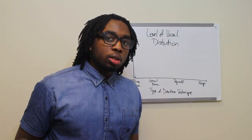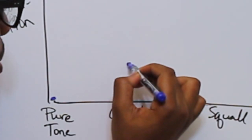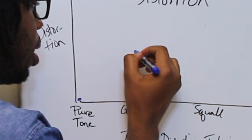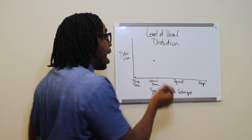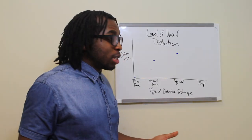But with a growl tone, like I was telling you about with Christina Aguilera, that has a lot more than a pure tone, so let's move that a little bit up. And then a gospel squall from people like Karen Clark Sheard has even more pops per second. And then we have rasp.